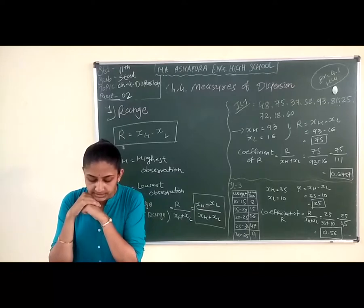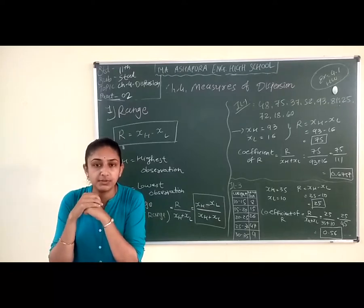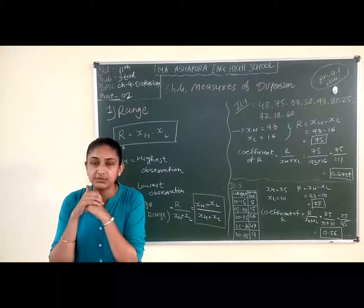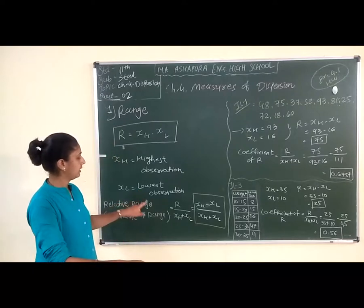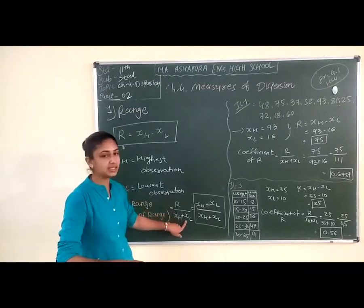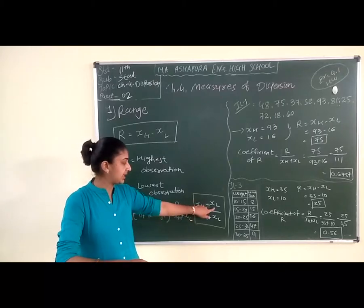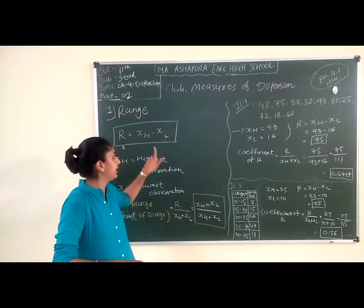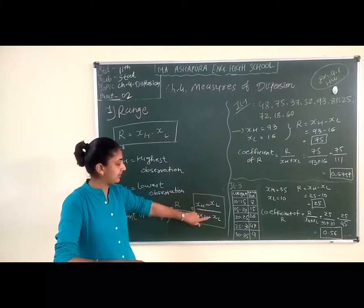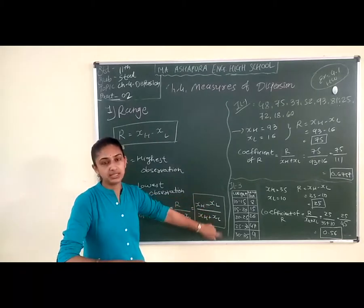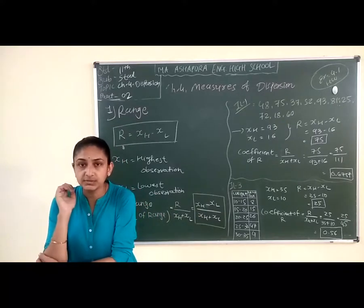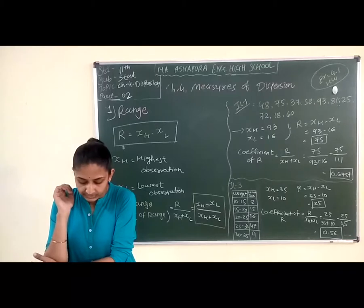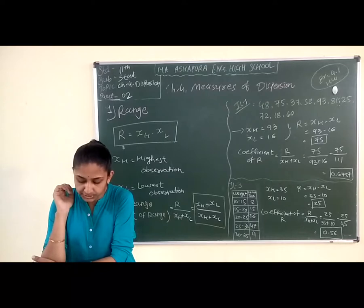Next is relative range. We can also call it coefficient of range. The coefficient of range is equal to R divided by XH plus XL, which simplifies to XH minus XL divided by XH plus XL. This is the formula to find the value of coefficient of range or relative range. The relative range is also known as coefficient of range and it is free from the unit of measurement.